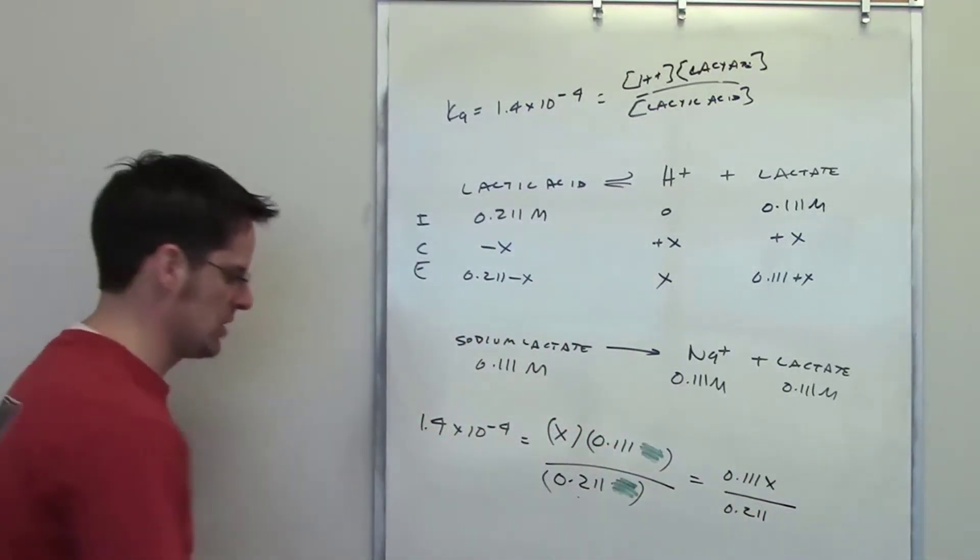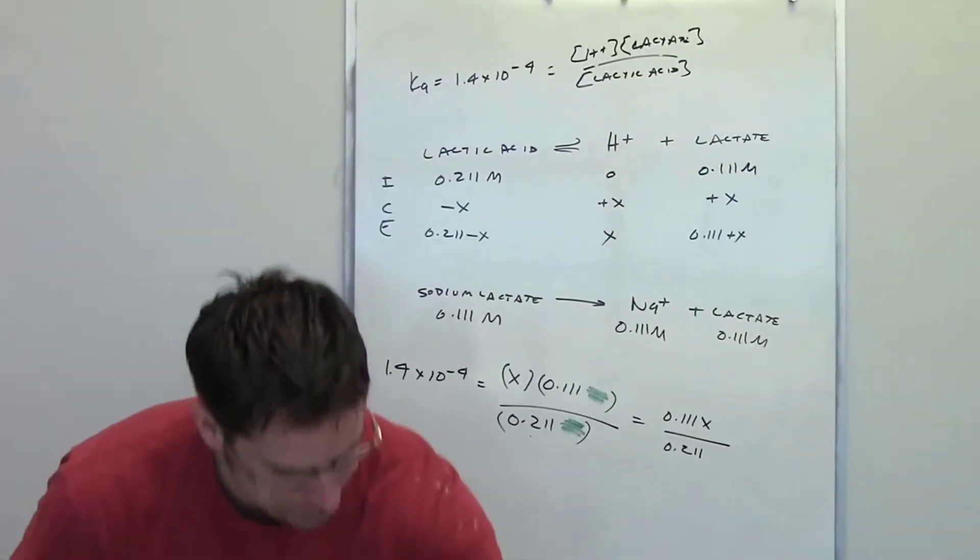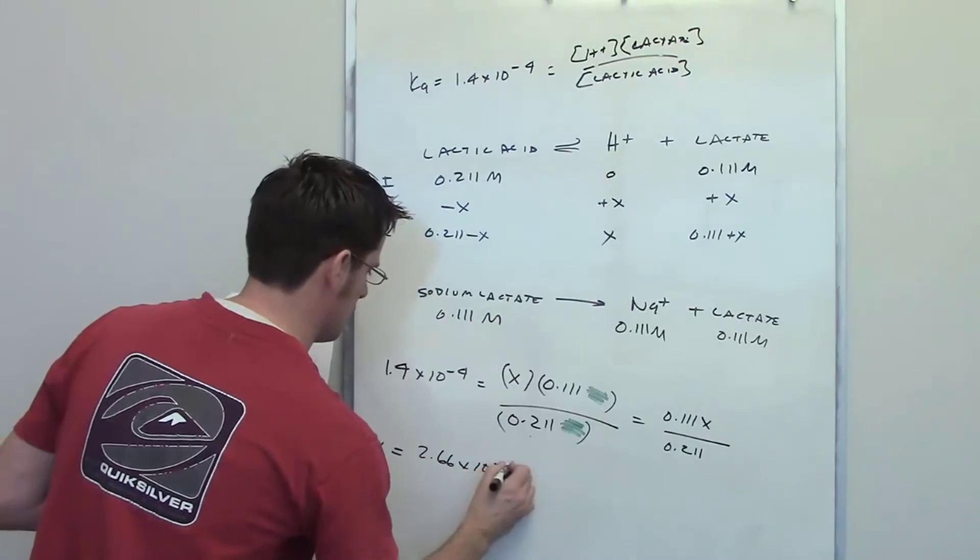Simplify this expression to be 0.111X divided by 0.211. That is also equal to this number. Now, I solve for X. When I solve for X using this, I end up getting 2.66 times 10 to the negative fourth.